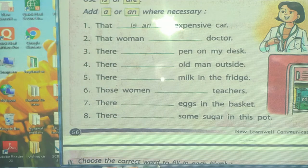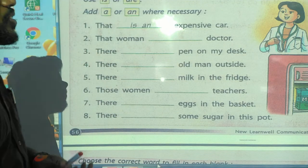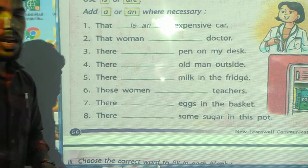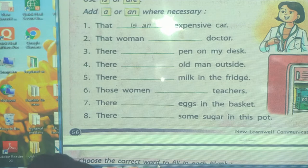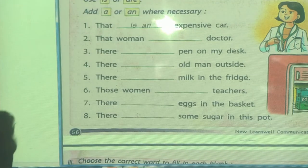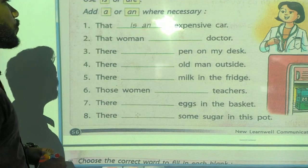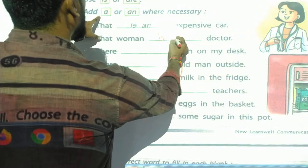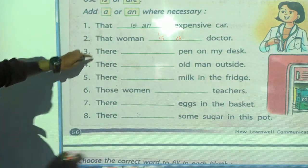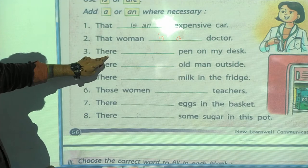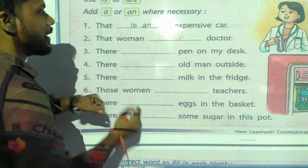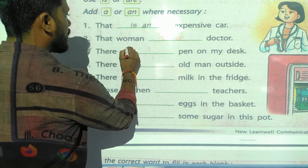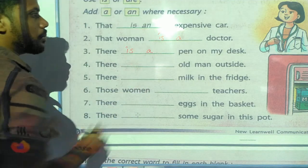First one: 'That is an expensive car.' Second one: 'The woman is a doctor.' And the third one: 'There is a pen on my desk.'